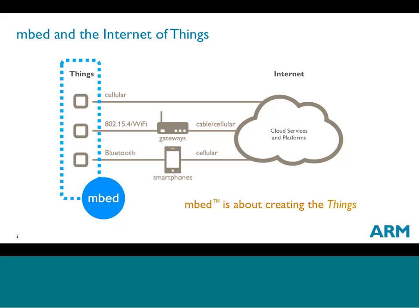Looking at how all these things fit together and where Embed is focusing — it's the things on the left-hand side. It's embedding connectivity and a tiny bit of intelligence to get the information that these devices are producing onto the Internet, so we can make smart decisions about the way things happen and interact with them as well.